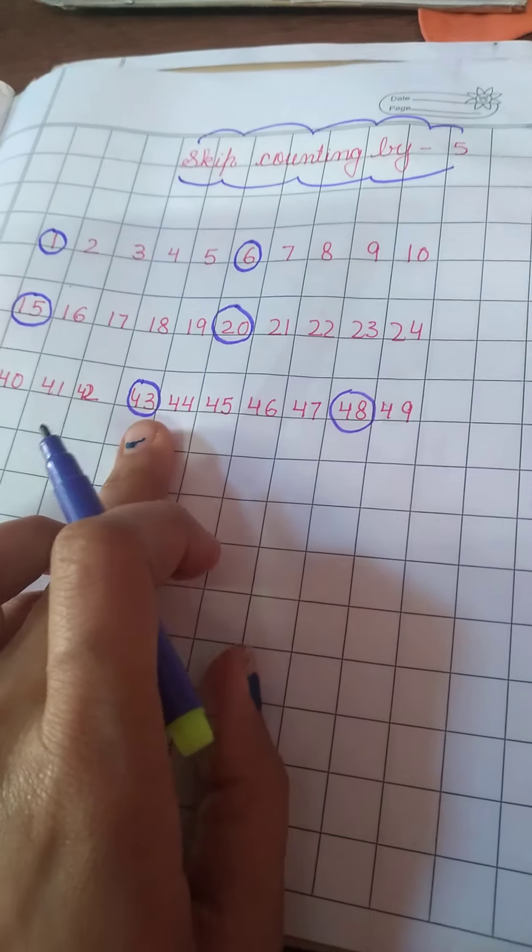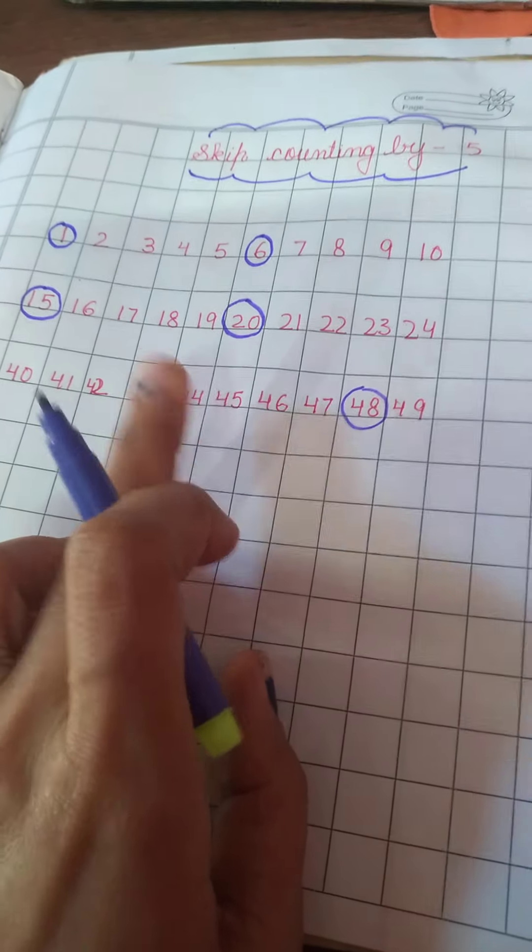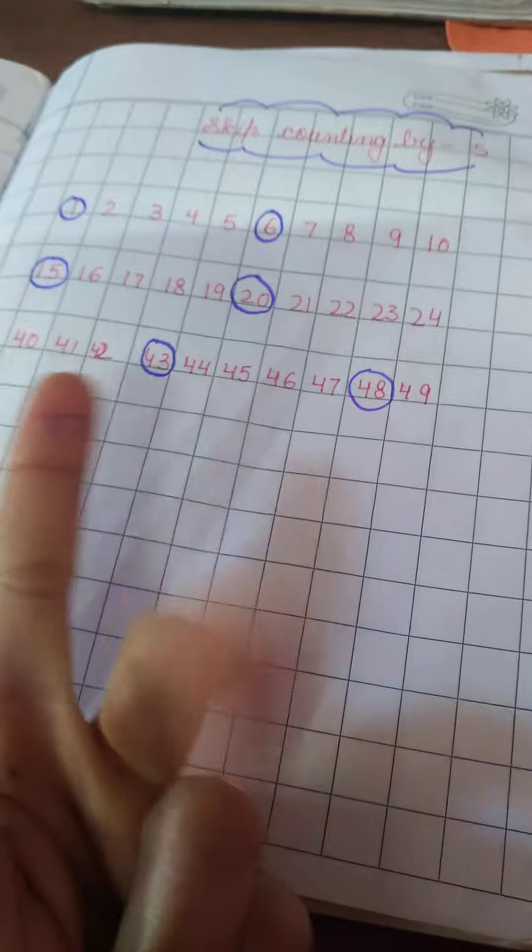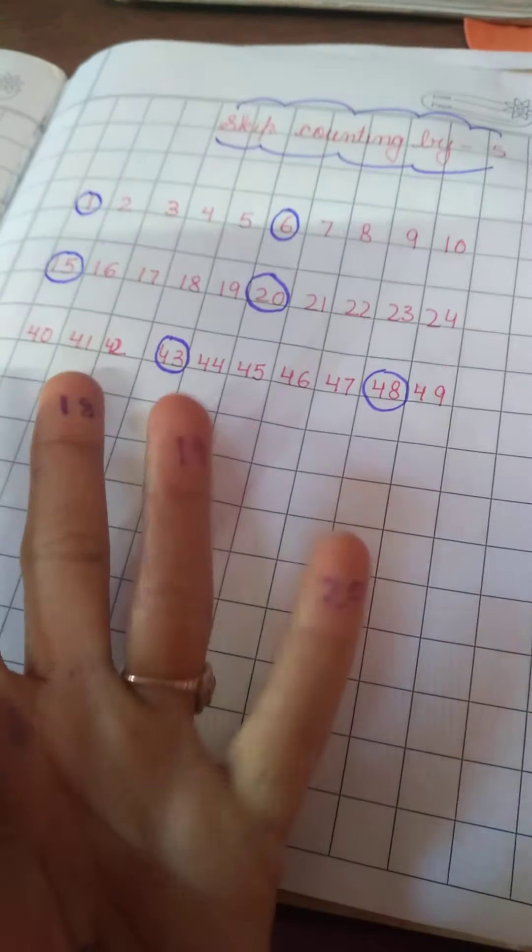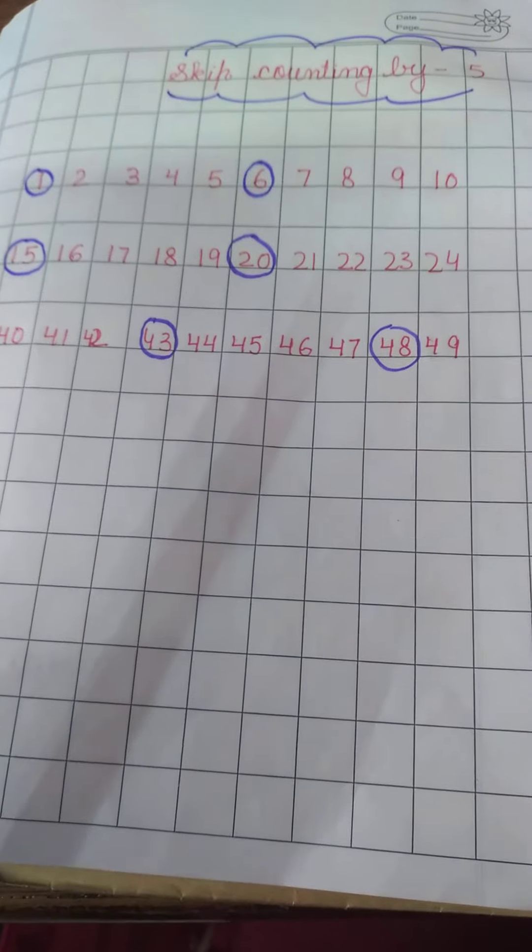So aapko kya karna hai? You have to count after 43: 44, 45, 46, 47, 48. 44, 45, 46, 47, 48. 48 is the fifth number. So this is how we will do skip counting by 5.